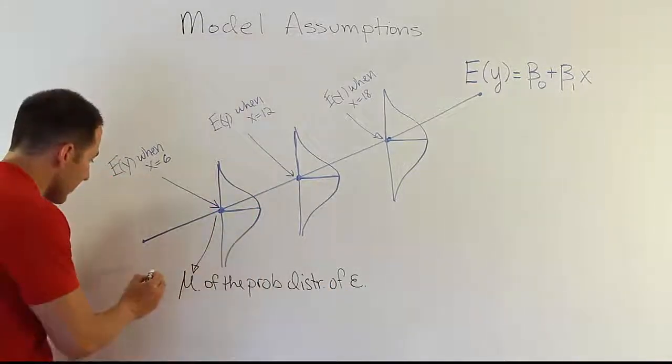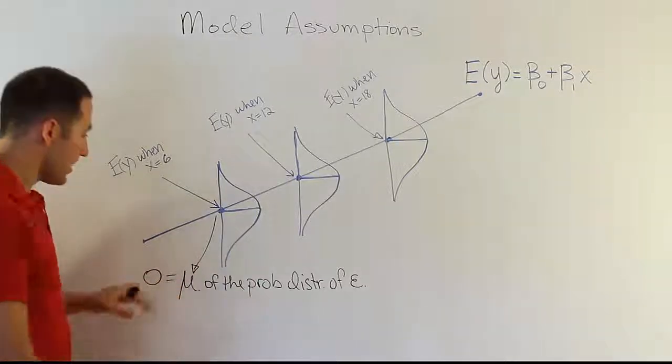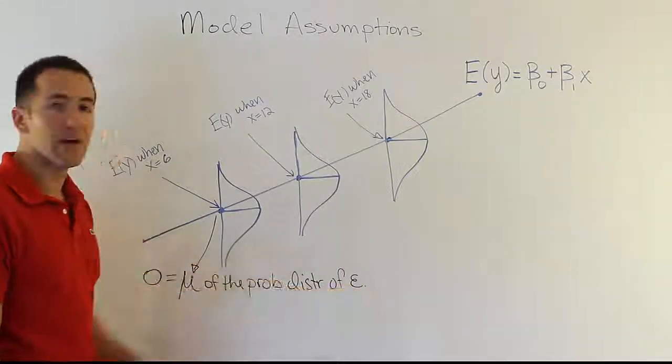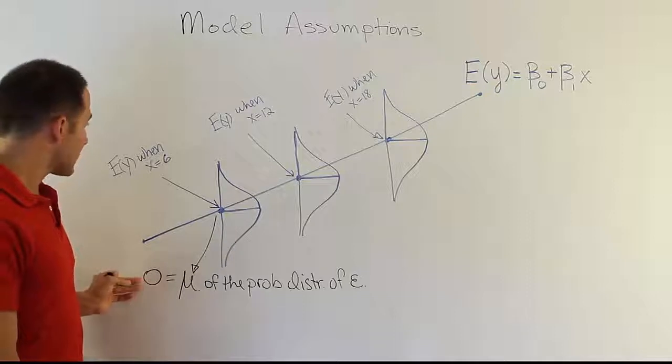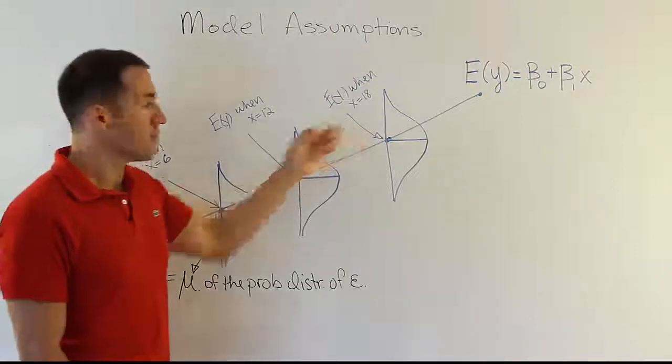So if that's the average location of the error term, then that means the mean is zero. So you basically fill this in and say zero is equal to the mean of the probability distribution of the error term. So that's really nice. It means the error terms, they all have a mean of zero.